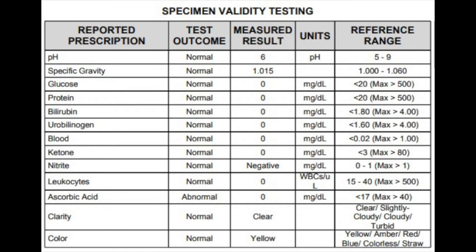We also check for pH level, glucose, protein, ketone bodies, nitrate, urobilinogen, bilirubin, and presence of blood. In urine analysis of a normal person, you won't be able to detect any abnormal presence — that means everything is normal.